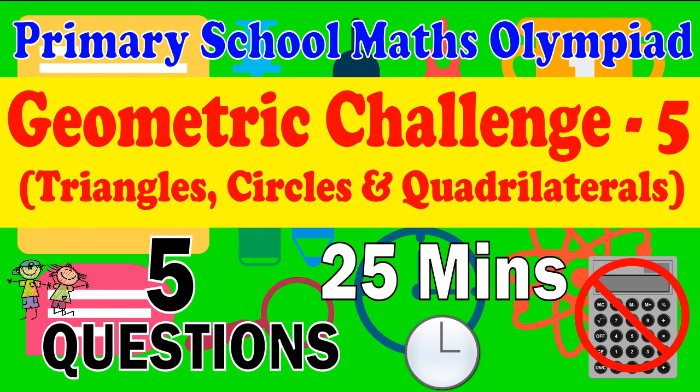This is a challenge for Primary School Math Olympiad for questions related to geometry for mixtures of triangles, circles, and quadrilaterals. There are 5 questions. The challenge is to complete them within 25 minutes.